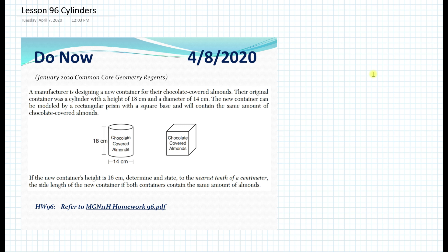For the do now, we have a previous geometry regents from January 2020. A manufacturer is designing a new container for their chocolate-covered almonds. The original container was a cylinder with a height of 18 centimeters and a diameter of 14 centimeters. The new container can be modeled by a rectangular prism with a square base and will contain the same amount of chocolate-covered almonds.